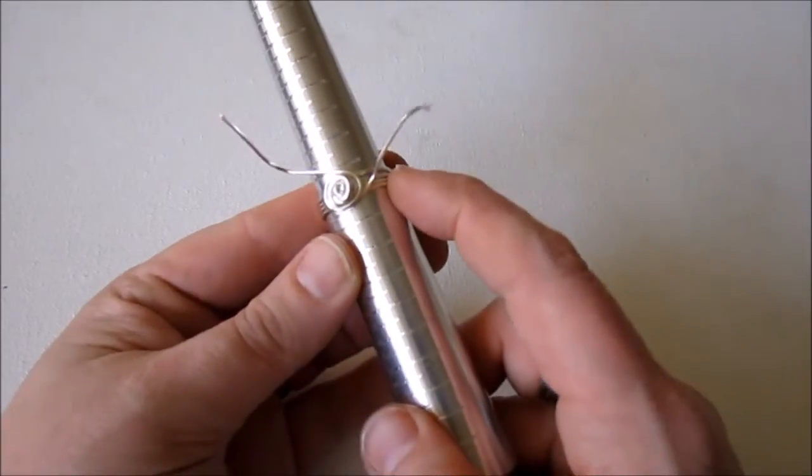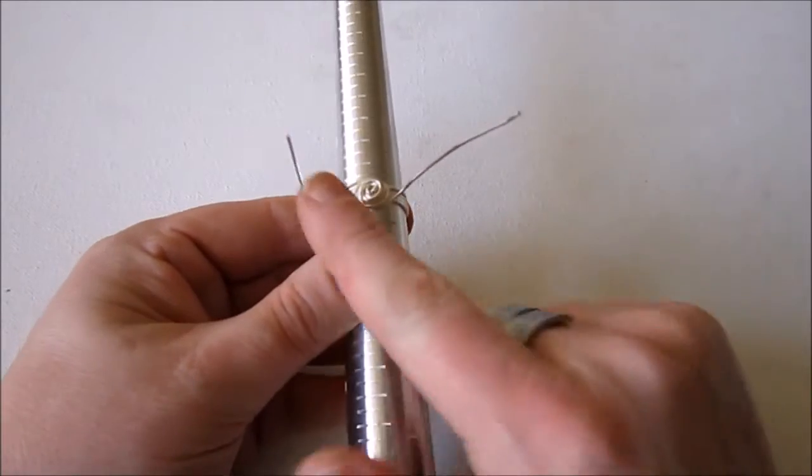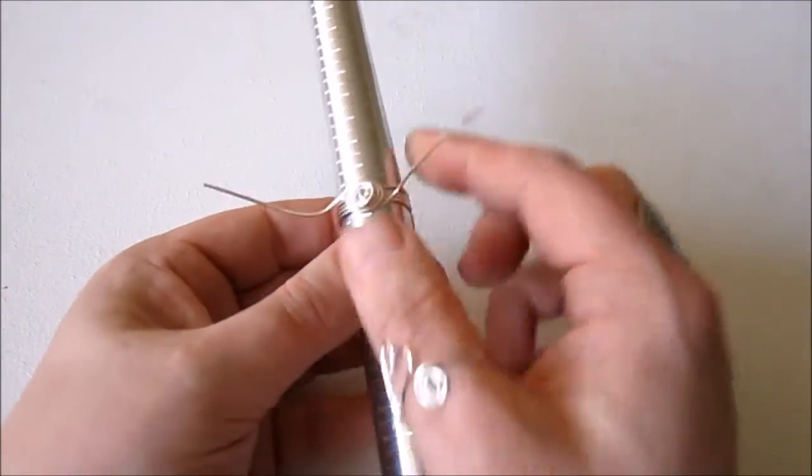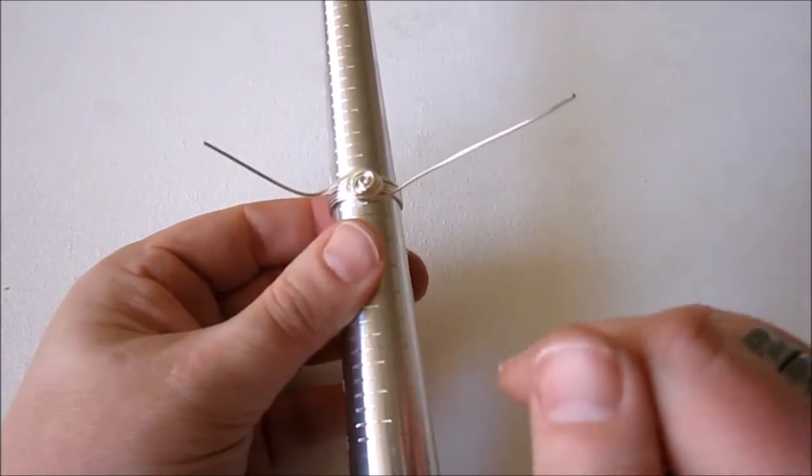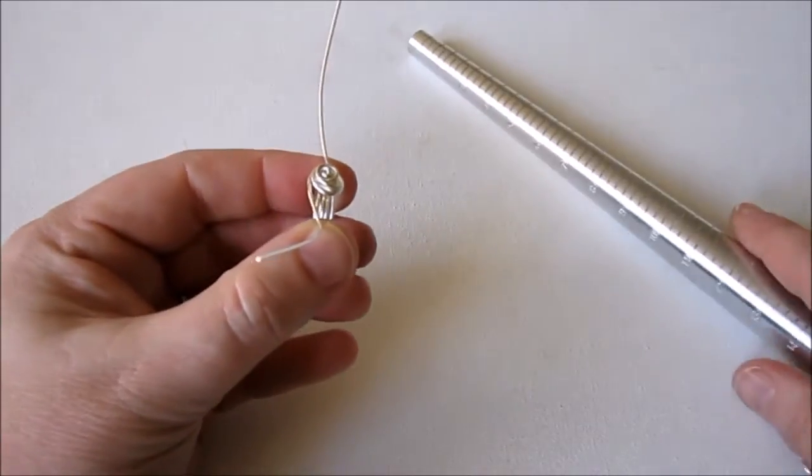I'm not telling you how many times to go around because you can really decide how you want your rosebud to look. So when you're happy, make sure your wires end at each side. You have one going either way.